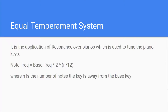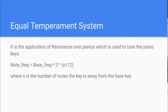Coming to our last topic — the equal temperament system. It is an application of resonance over pianos; to tune any musical instrument we need resonance so that at the peak value we can assign frequencies. Its equation is: note frequency = base frequency × 2^(n/12), where n is the number of notes away from the base key. We'll use these two equations to generate and calibrate a piano, then pass song notes and chords and remix them to produce new music.